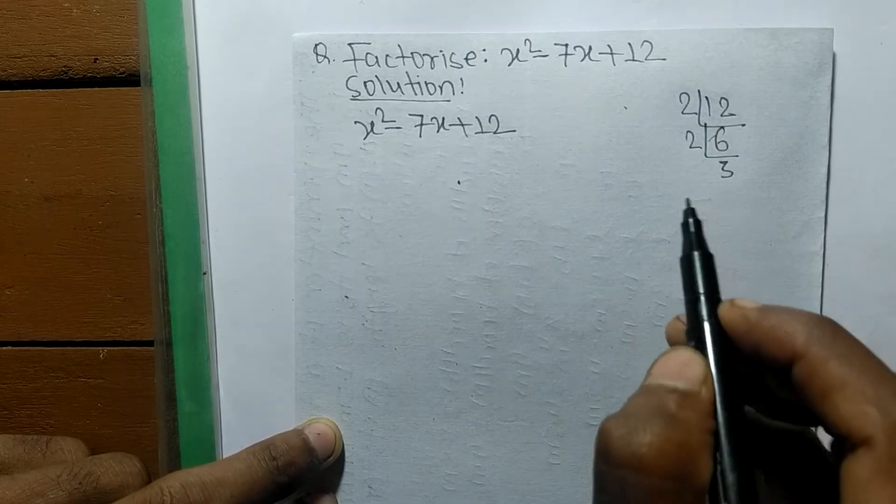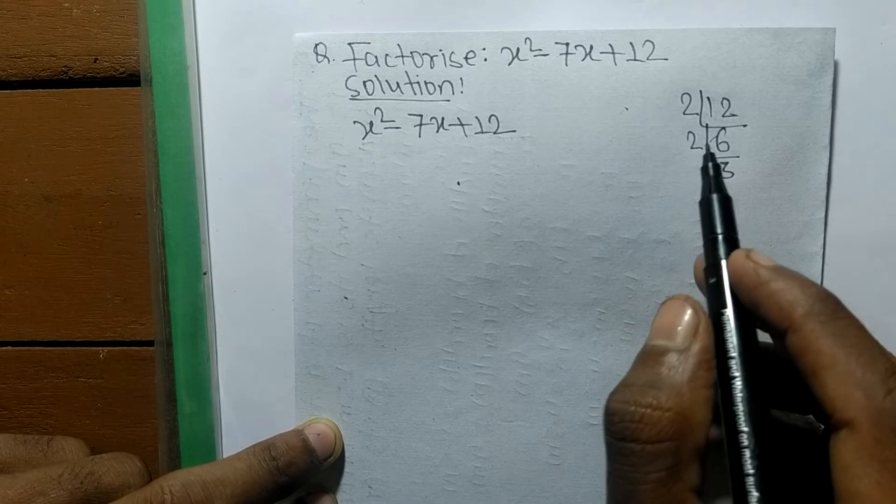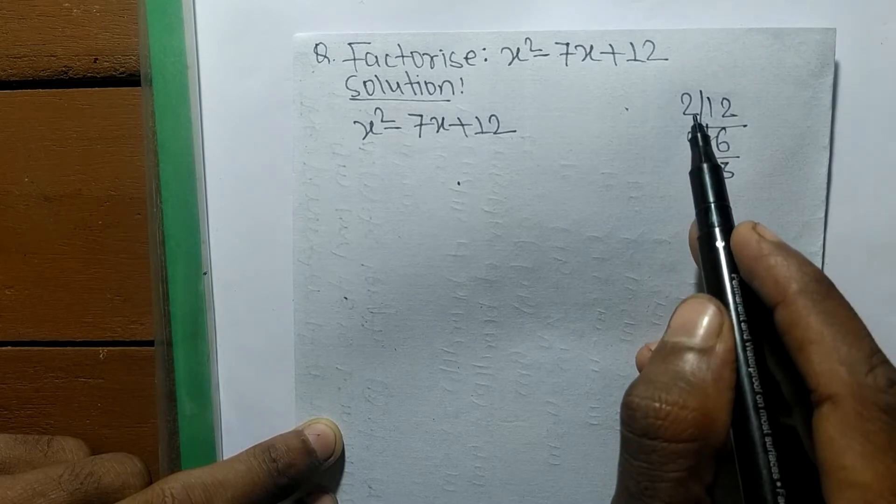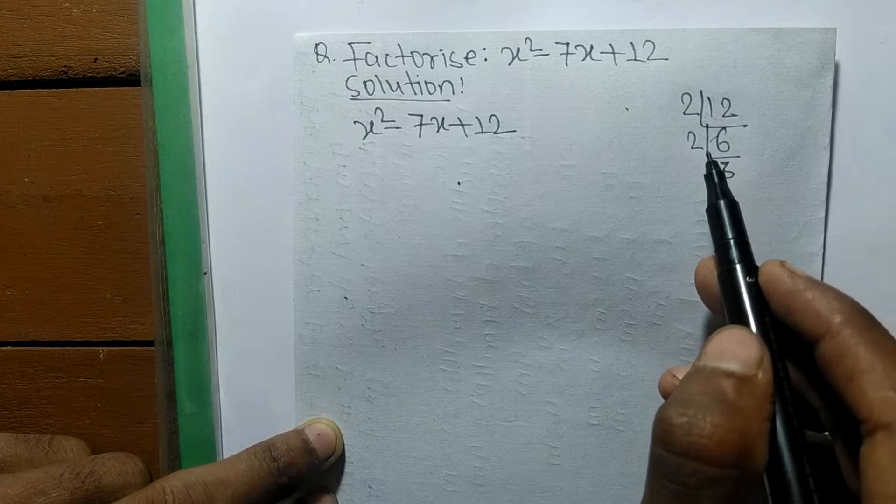It is 2 times 6, which equals 12, and 2 times 3 equals 6. So we got the numbers 2, 2, and 3. By multiplying these numbers we have to find out such a number that by adding them we get -7.